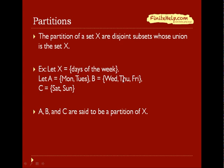Notice the second thing is that when you put A, B, and C together, the union of them, you can see that includes Monday, Tuesday, Wednesday, Thursday, Friday, Saturday, and Sunday, which put together to be the days of the week. So therefore, A, B, and C are said to be a partition of X.